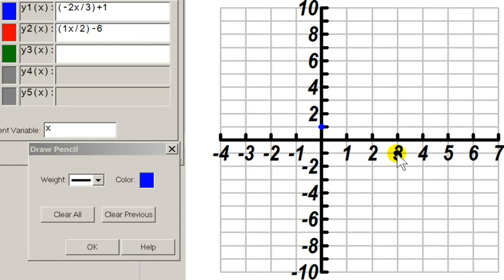To find the third point, again, use the slope of negative 2 thirds, which means from the second point, go down two units, and go across three. Now, simply draw a line through these three points, like so.